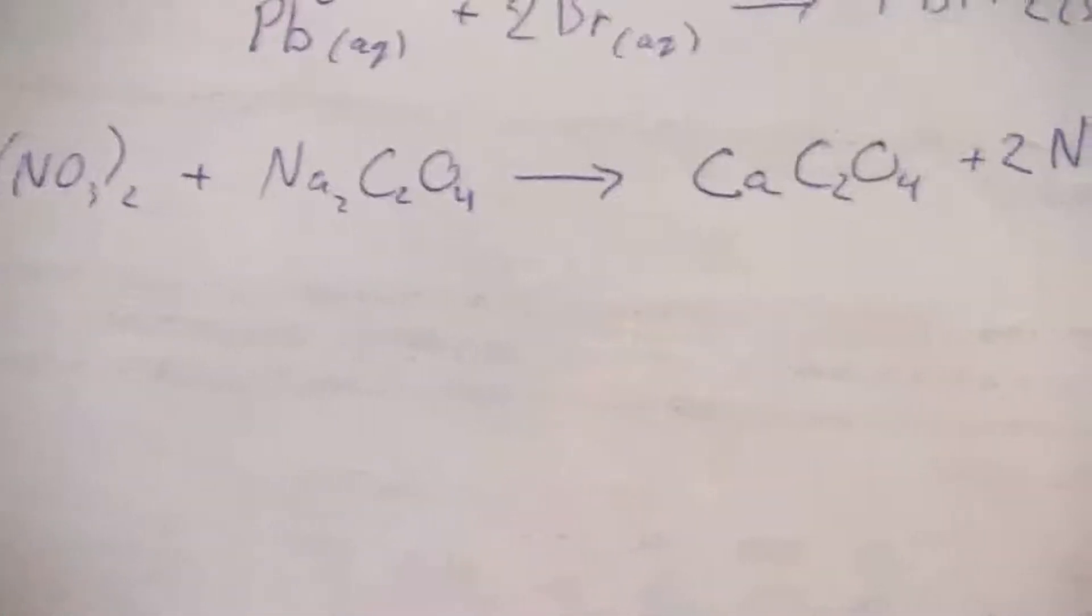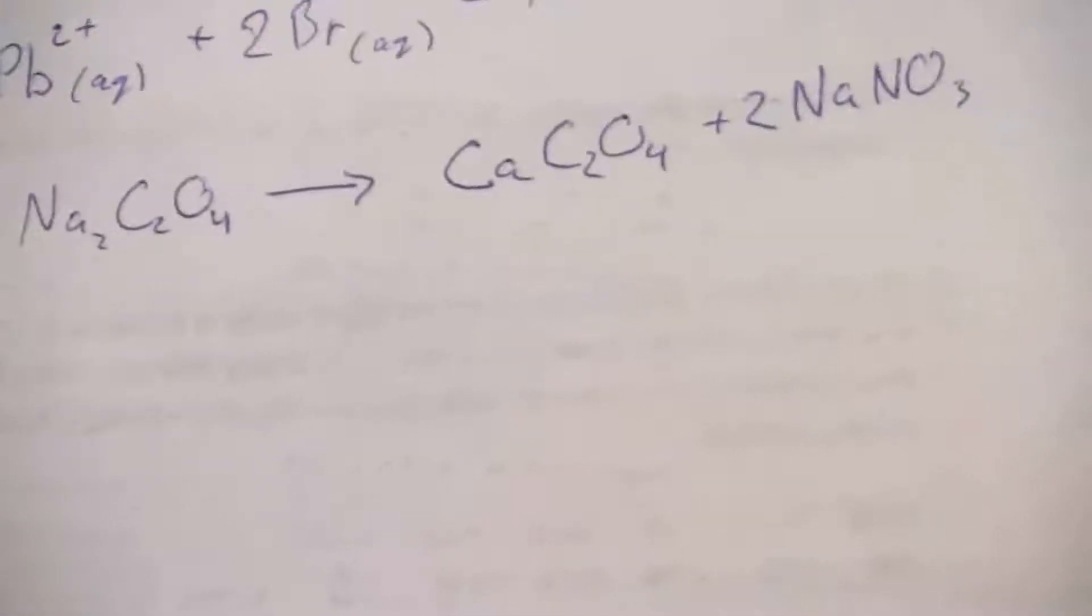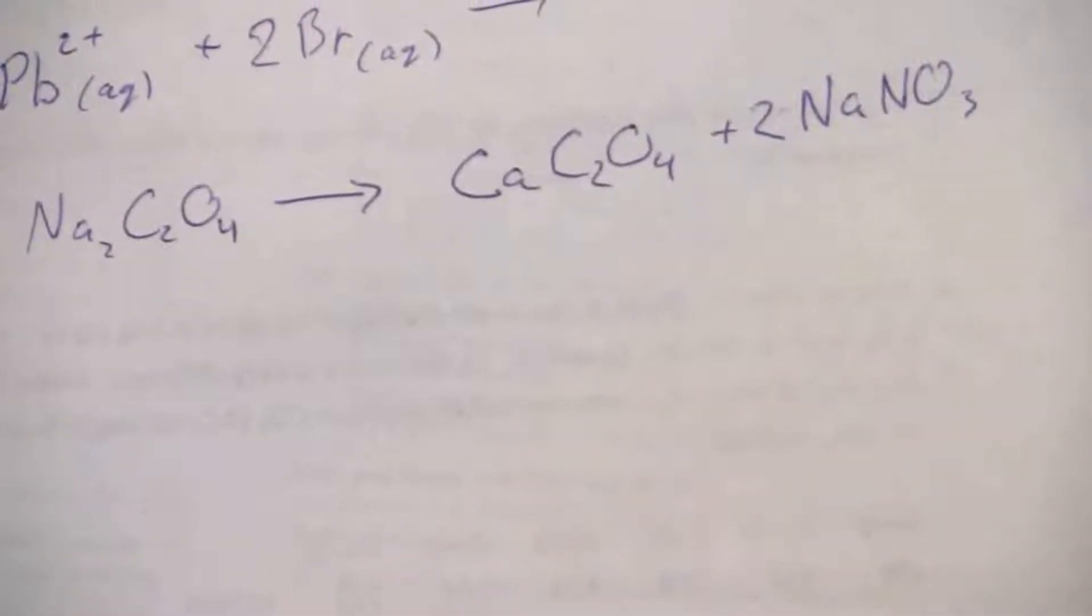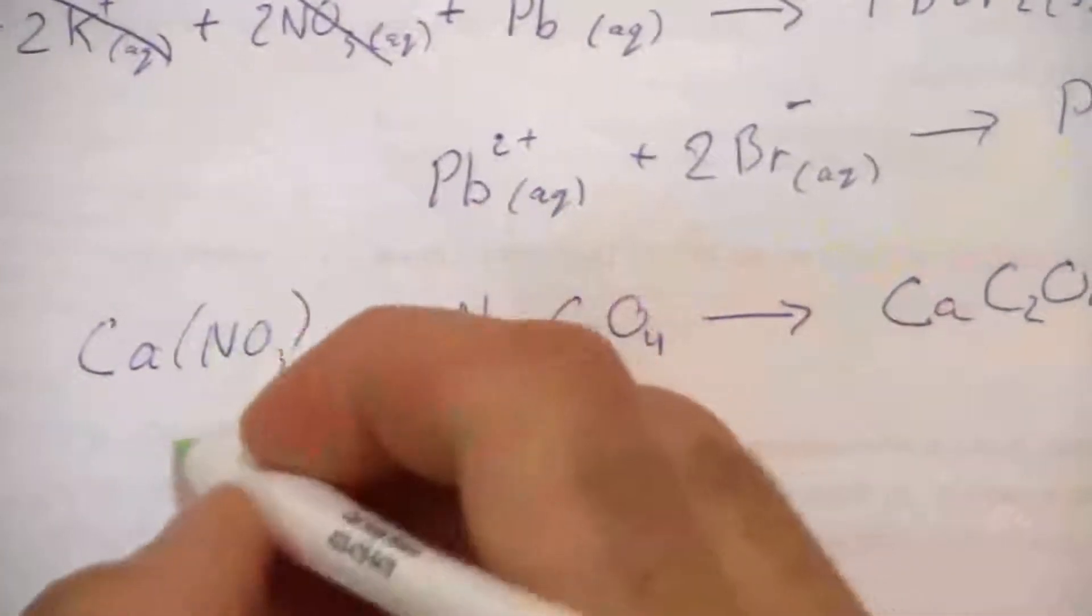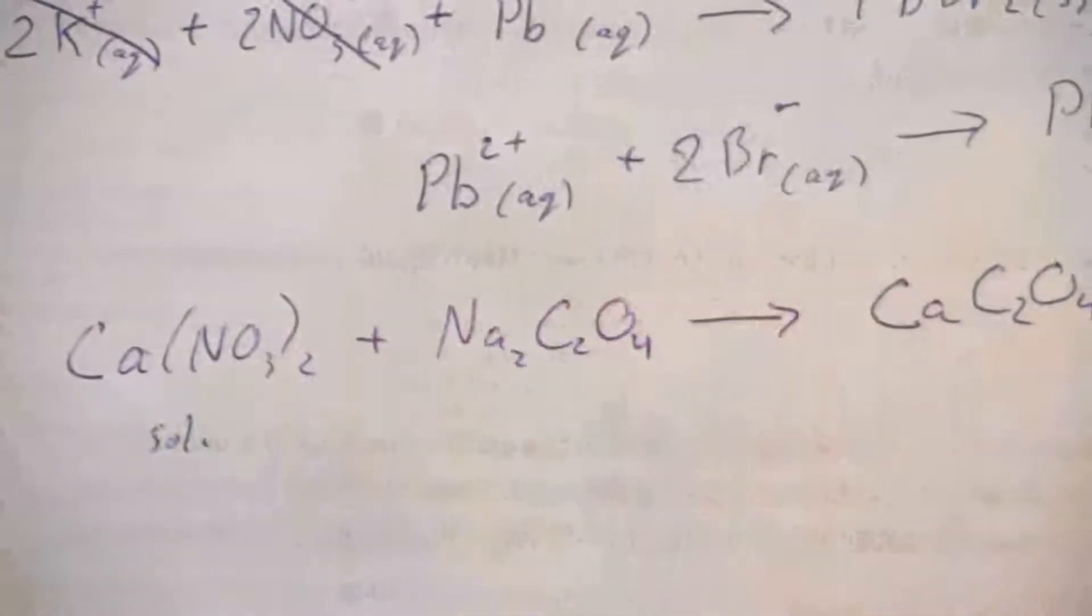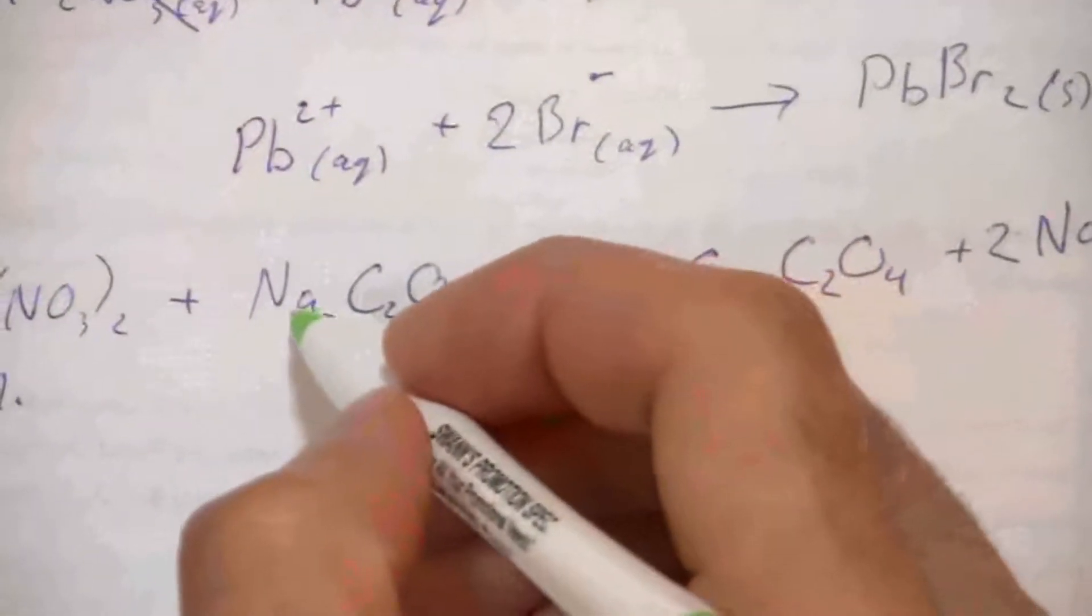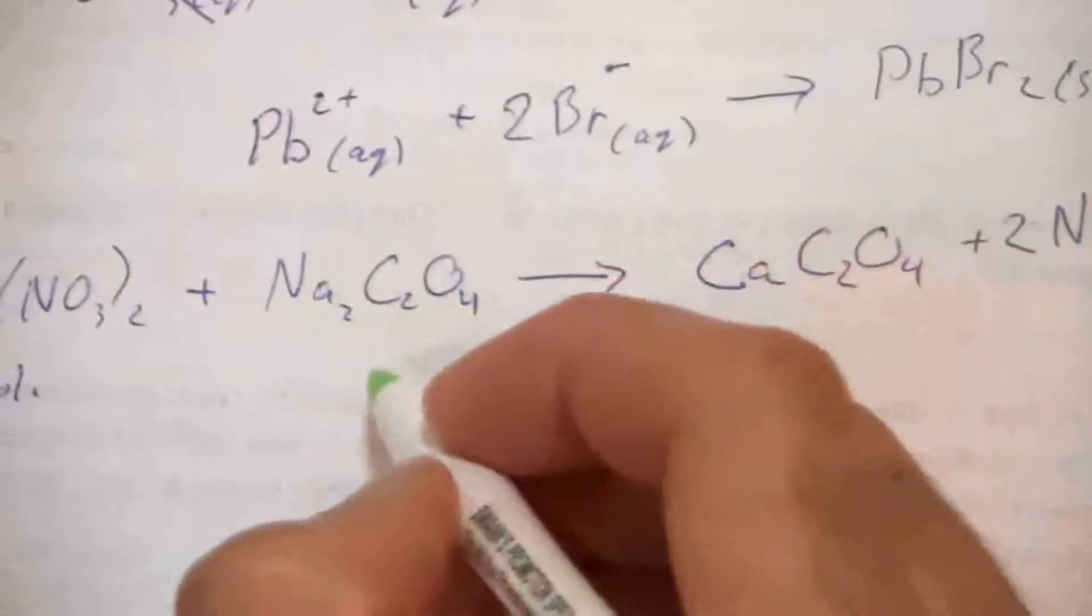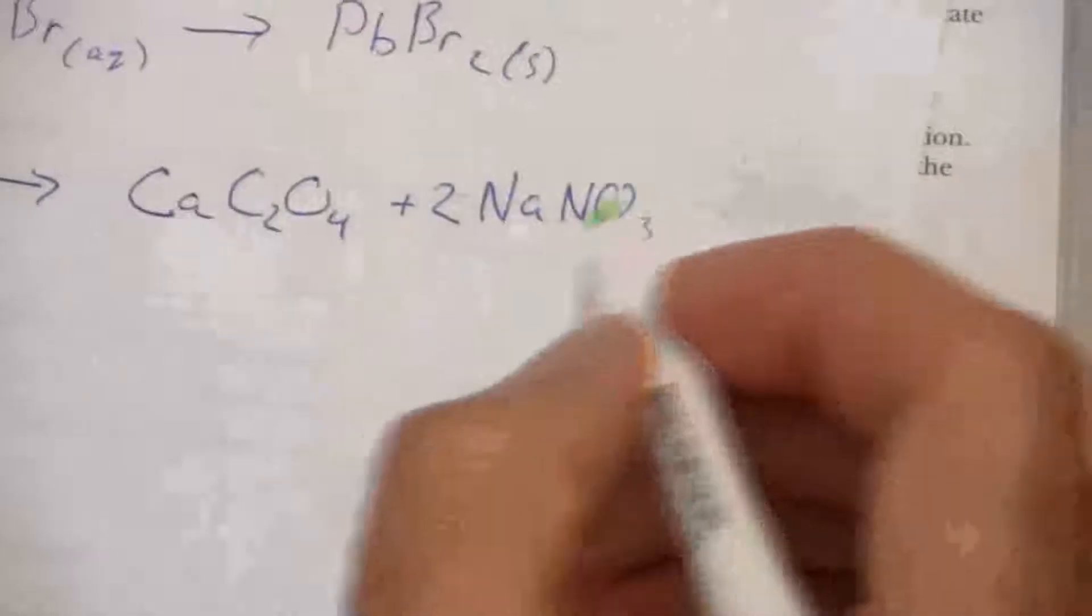Now I have the balanced equation. We need to write the net ionic equation. You'll recall that nitrates are soluble, and also that alkali metals are soluble.